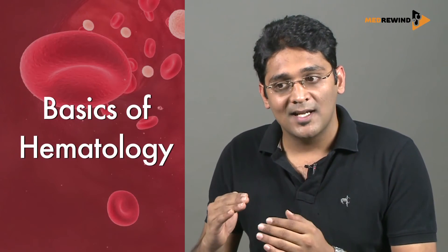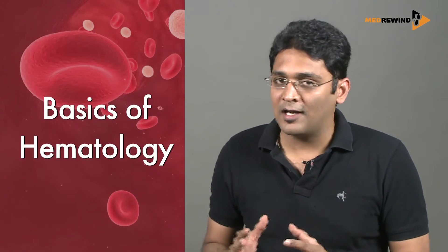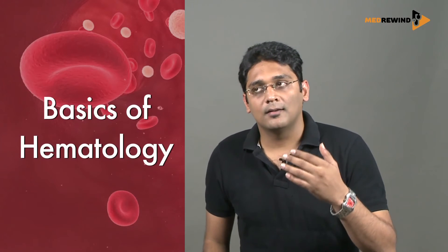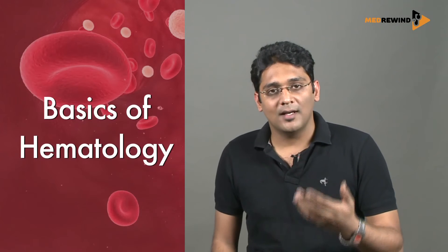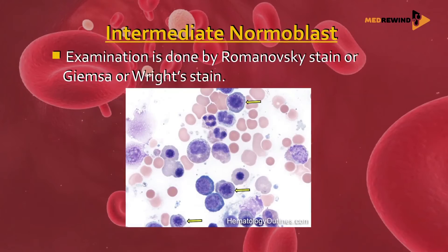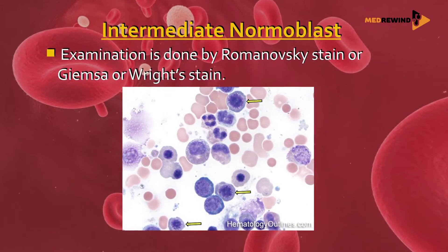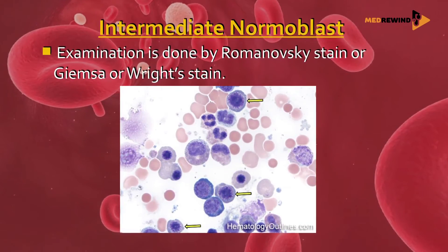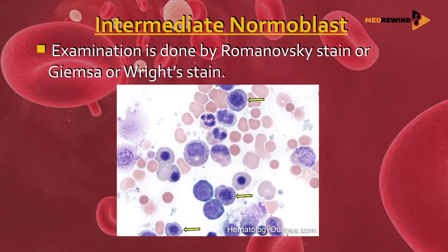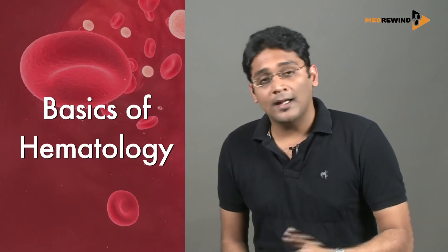The proerythroblast is the stage where reticulocytes can be seen with supra vital stains or electron microscopy. Normoblasts have three stages: early, intermediate, and late. The important stage is the intermediate normoblast, which is the first stage from which reticulocytes can be seen with normal stains — Romanowski, Giemsa, and Jenner stains.